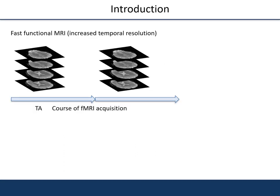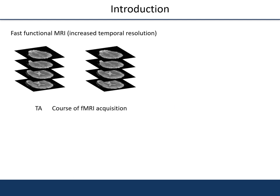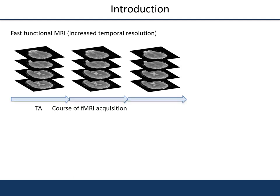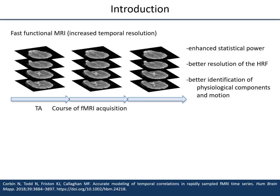The aim of this work was to develop a sequence for fast functional MRI. This means that a high sampling rate of the brain volumes during the course of the acquisition is desired, while keeping the compromise of image quality minimal. Increased temporal resolution has received particular interest in fMRI because it gives enhanced statistical power, a better resolution of the hemodynamic response function, and allows a better identification of physiological components and motion.